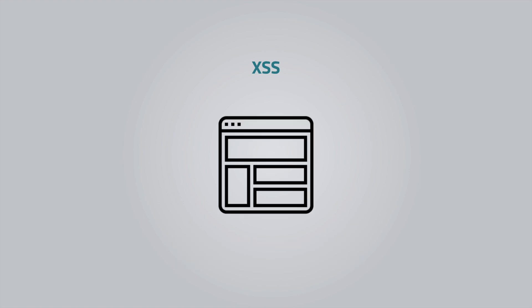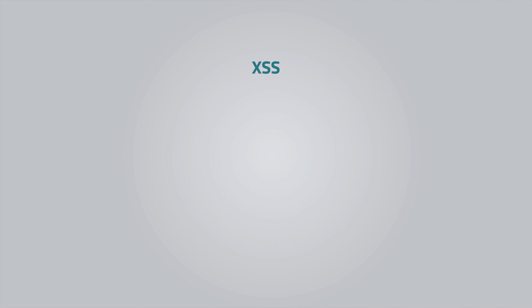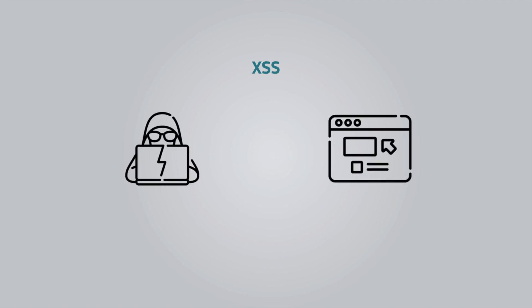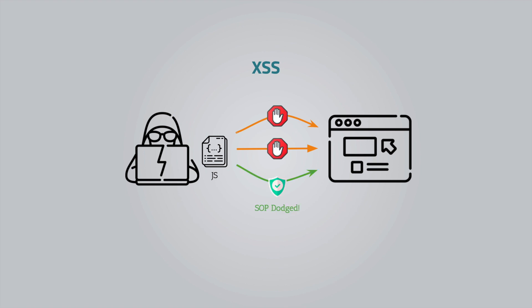They could have access to pretty much everything your browser stores and manages. They could even rewrite entire pages you visit, which is called website defacement. Essentially, a cross-site scripting attack happens when the attacker finds a way to let the browser execute JavaScript code. It allows the attacker to circumvent the same origin policy.